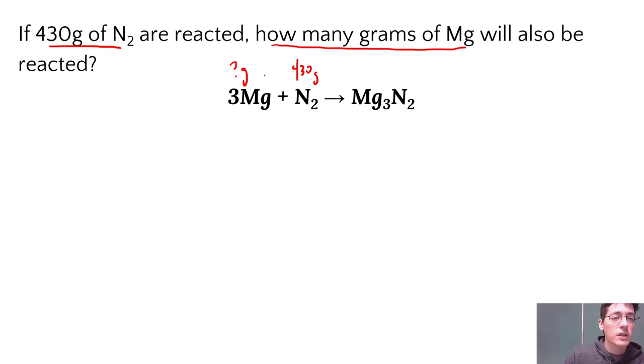Remember a balanced chemical equation gives me ratios. For every nitrogen, I need three magnesiums to get one magnesium nitride. We can talk in that particle sense. But particles aren't always helpful, because I can't do that in a lab.